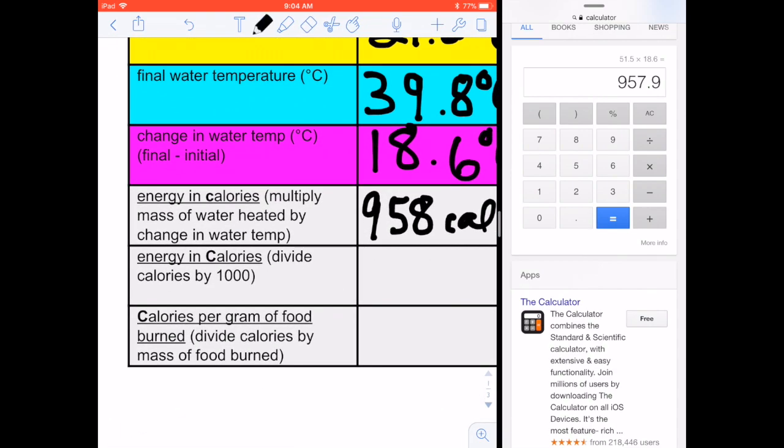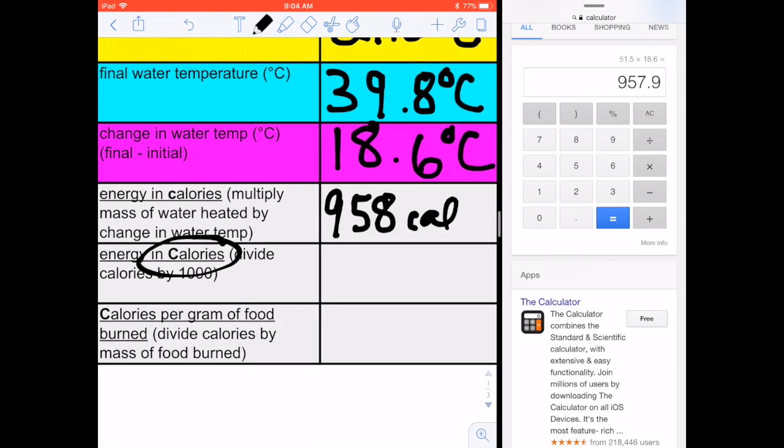Okay. In order to determine the energy in big C calories, there's a thousand little c calories in one big C or food calorie. So I'll just take this number and divide by a thousand. So I'll just move the decimal place over three to the left, and it becomes 0.958 big C calories.